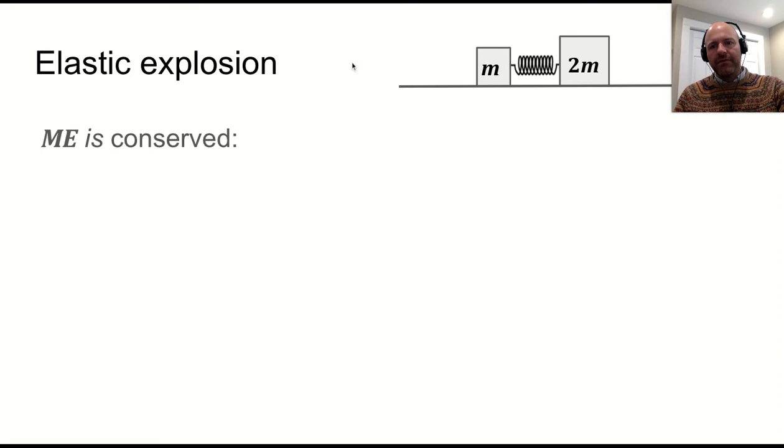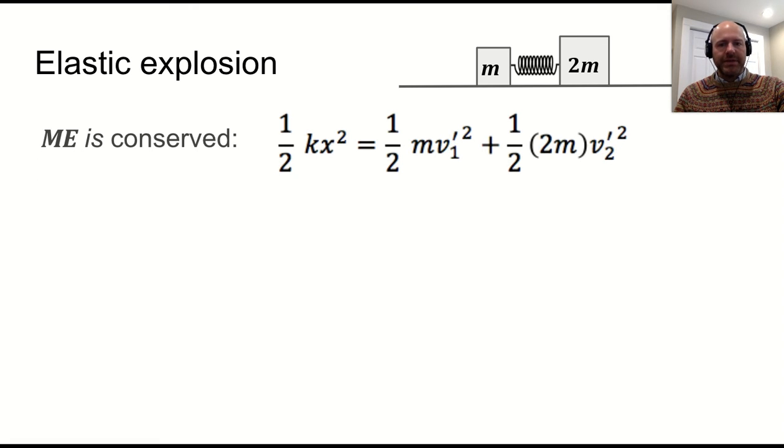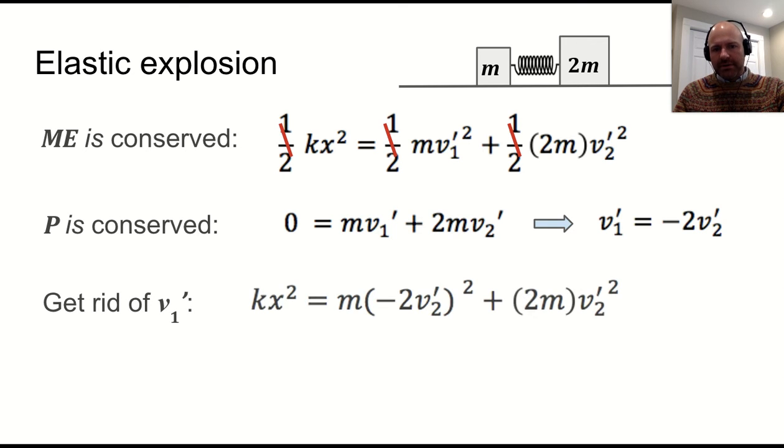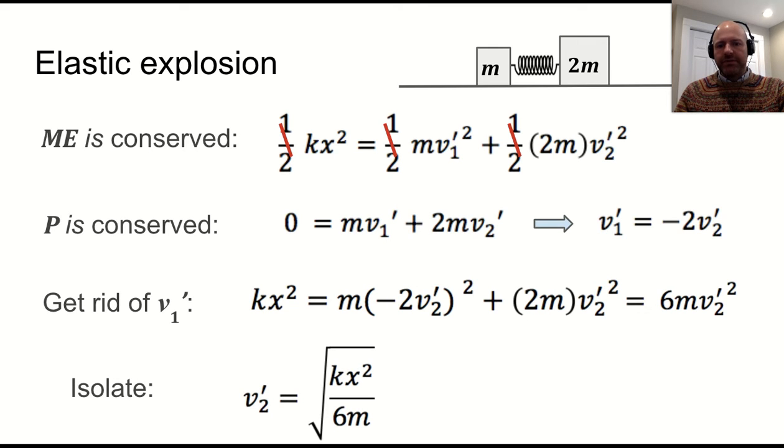In terms of mechanical energy conservation, we can say we start with one half kx squared, and we end up with the sum of their two kinetic energies. Momentum is also conserved. And so just like we did in our previous discussion about elastic collisions, we can combine those together. We can plug back into one of our equations, and we end up with an interesting result.